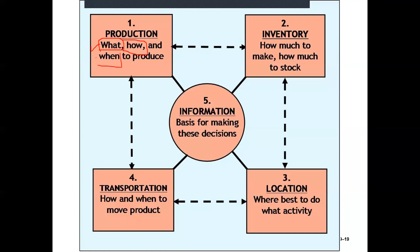Another important question in production is when to produce. Some products are seasonal — for example, Pepsi sales go up in summer and down in winter. So knowing when to produce and when not to produce is important. When you can answer what, how, and when to produce goods or services, it is going to move your supply chain in a smooth manner.